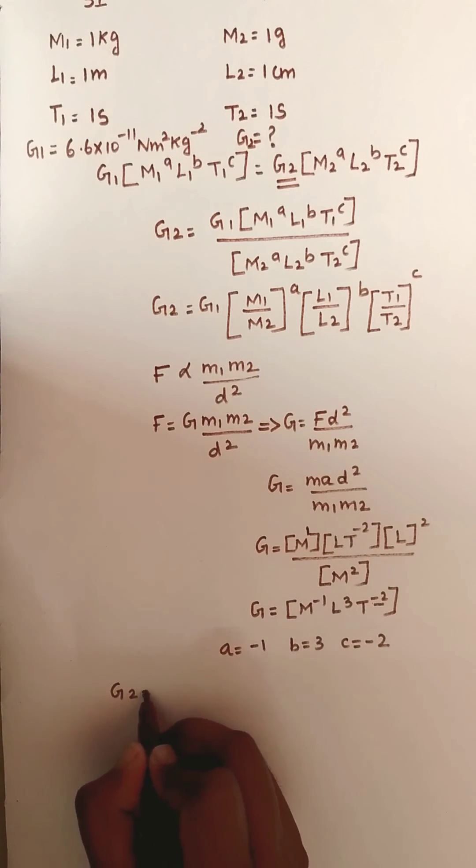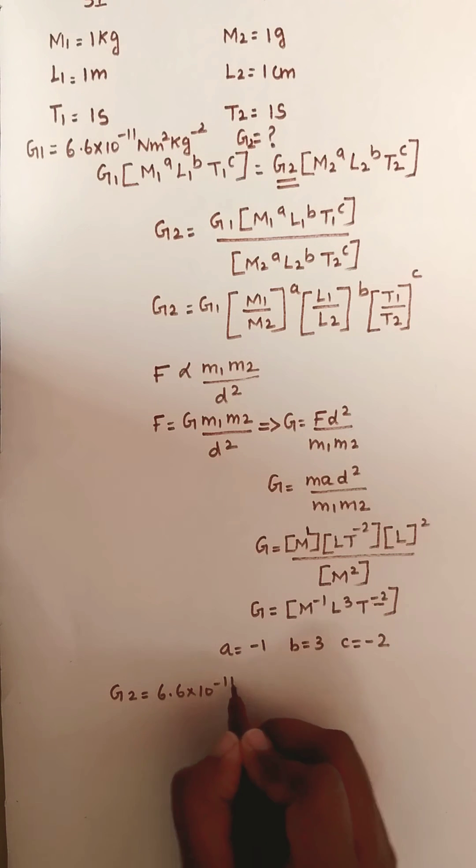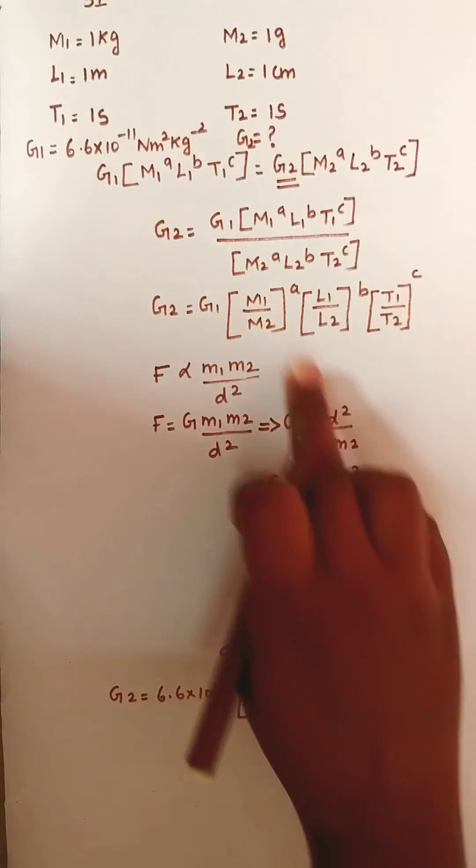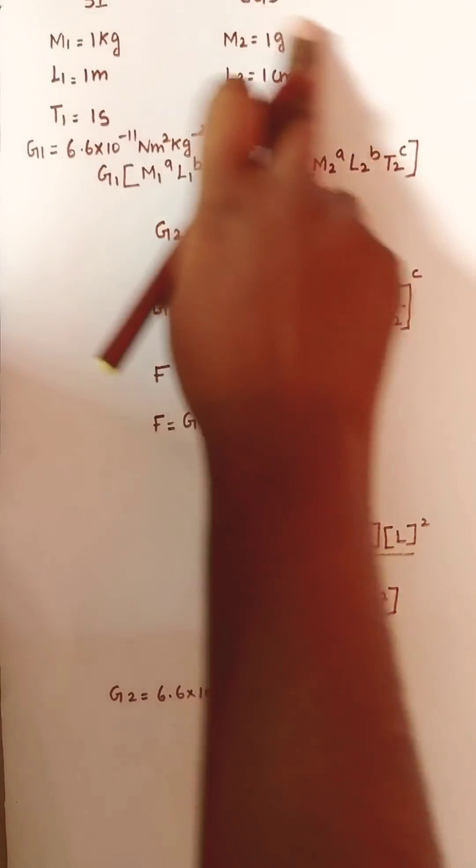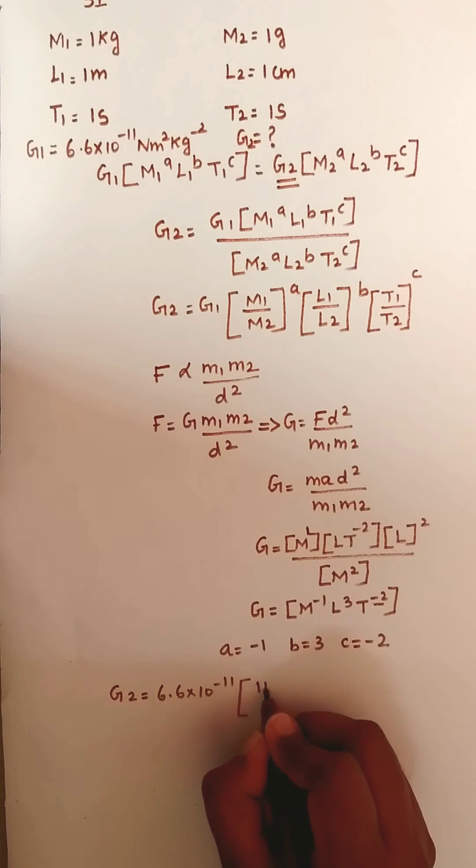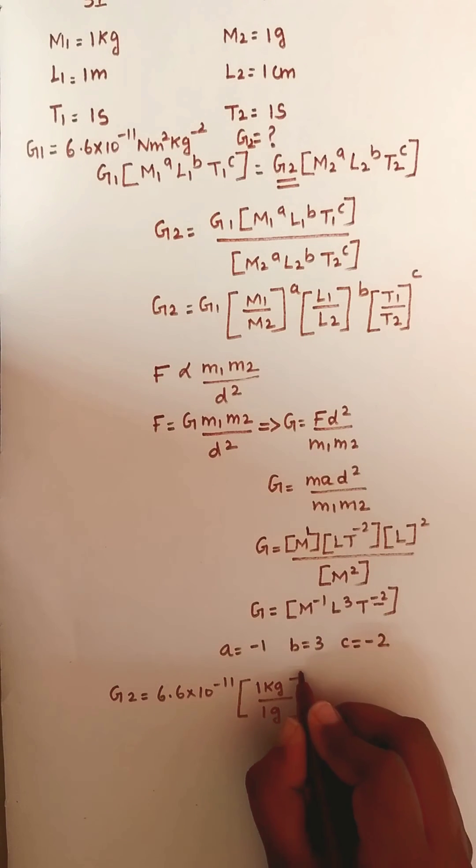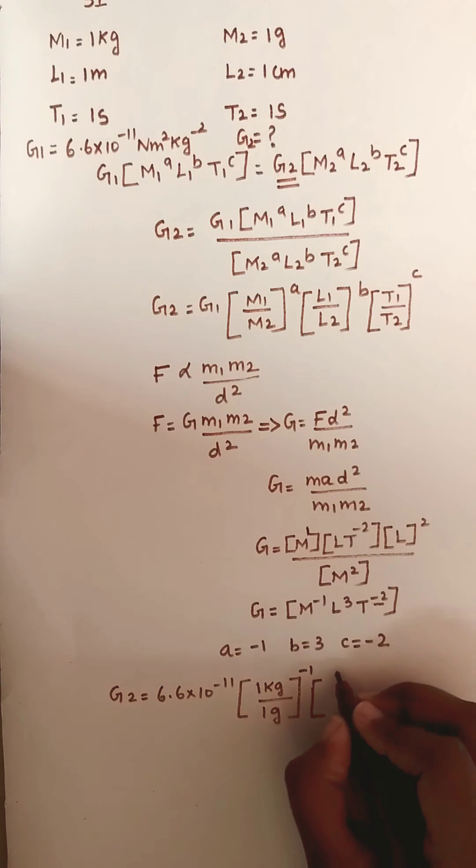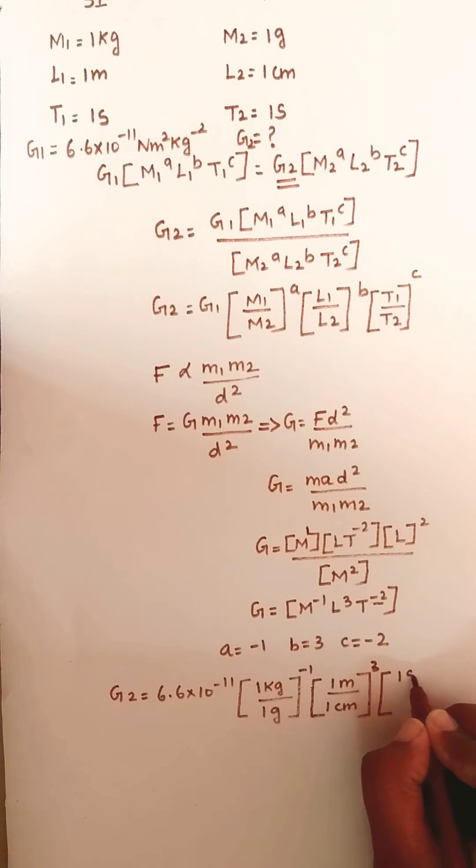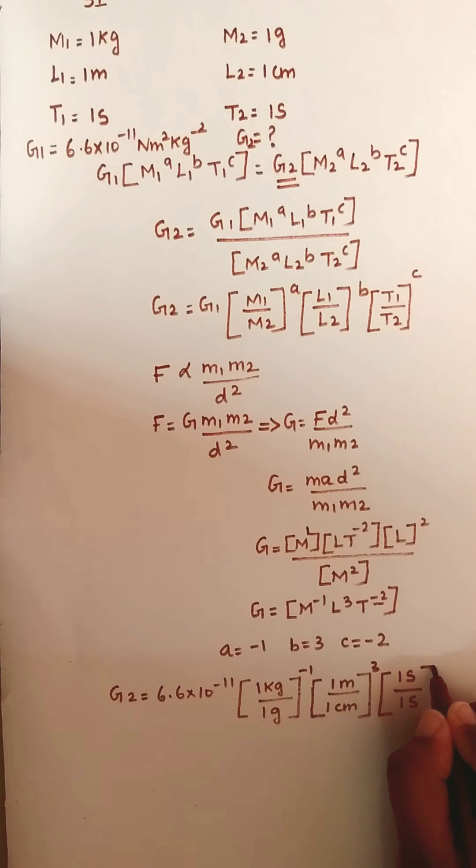G₂ = 6.6 × 10⁻¹¹ times [M₁/M₂]ᴬ[L₁/L₂]ᴮ[T₁/T₂]ᶜ. Substitute all the values: M₁ is 1 kilogram, M₂ is 1 gram, whole power A = -1. L₁ value is 1 meter, L₂ is 1 centimeter, whole power B = 3. T₁ value 1 second, T₂ value 1 second, whole power C = -2.